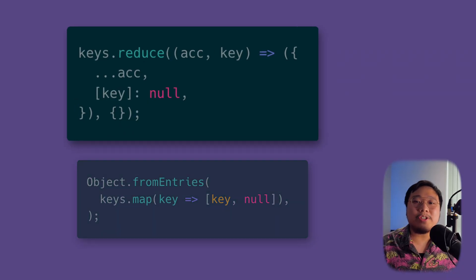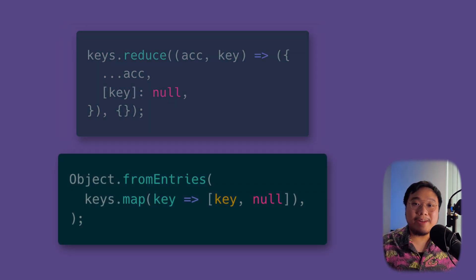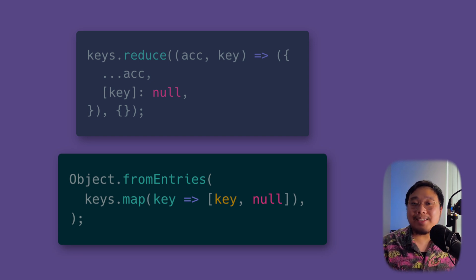But he disagreed. He argued that the reduce version is more readable because it resembles the object notation more — with all the curly braces and stuff. But I argued that Object.fromEntries does exactly what he wants and nothing more, and to me that is clearer. What started as a tiny nitpick quickly turned into a showdown of personal preferences. Neither of us could win. That's when I realized we were missing a shared framework.